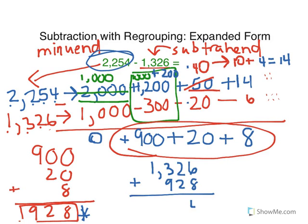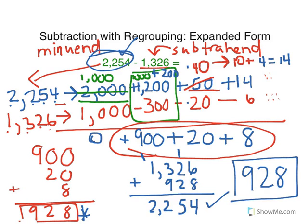6 plus 8 is 14. 2 plus 2 is 4, plus one more is 5. 3 plus 9 is 12. So put the 2 here. Regroup. And then 2. 2,254. This matches what the minuend was. So our answer is correct. The answer to this problem is 928. This video showed you how to subtract with regrouping using expanded form. I hope it was helpful.